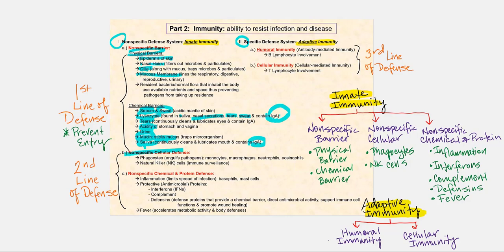The second line includes nonspecific cellular defenses — the phagocytes that are meant to engulf pathogens whole. We have monocytes, macrophages, neutrophils, and eosinophils. Natural killer cells, also called NK cells, are part of our immune surveillance and are a type of lymphocyte. For nonspecific chemical and protein defenses, inflammation is meant to limit the spread of infections, involving basophils and mast cells. We also have protective antimicrobial proteins: interferon, complement, and defensins.